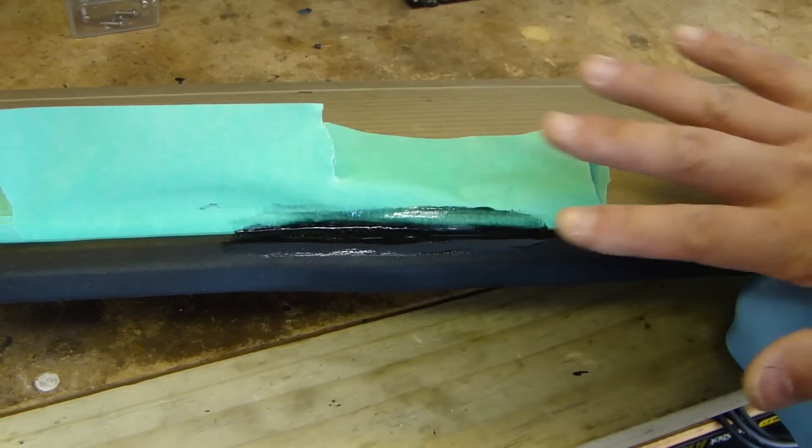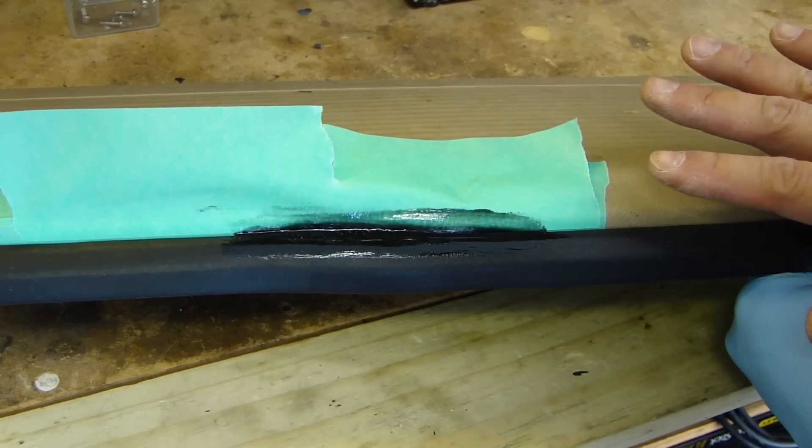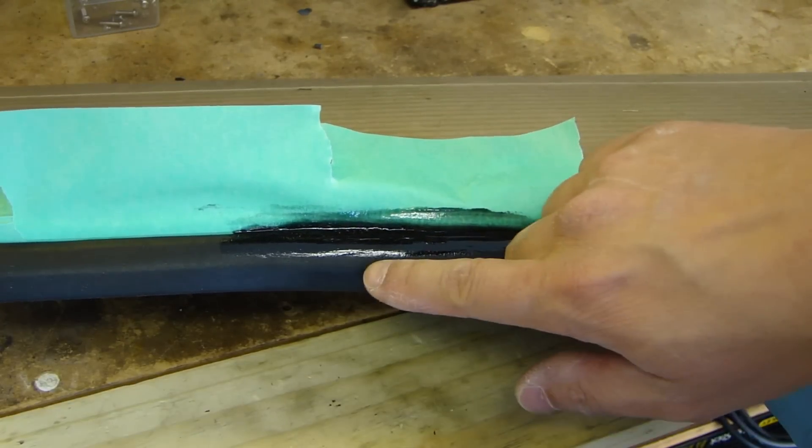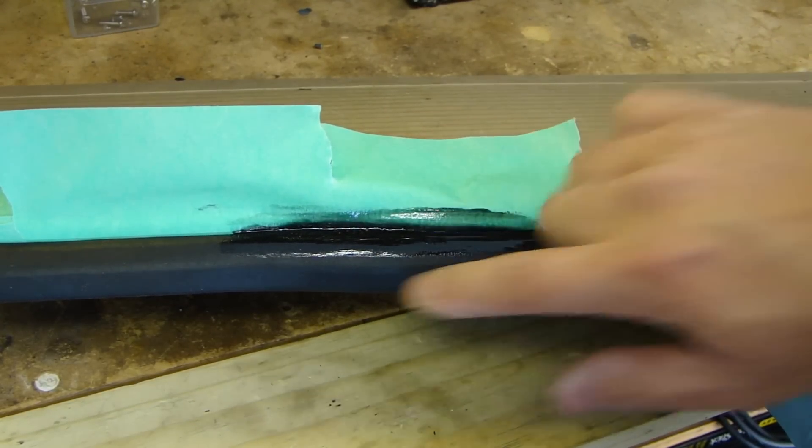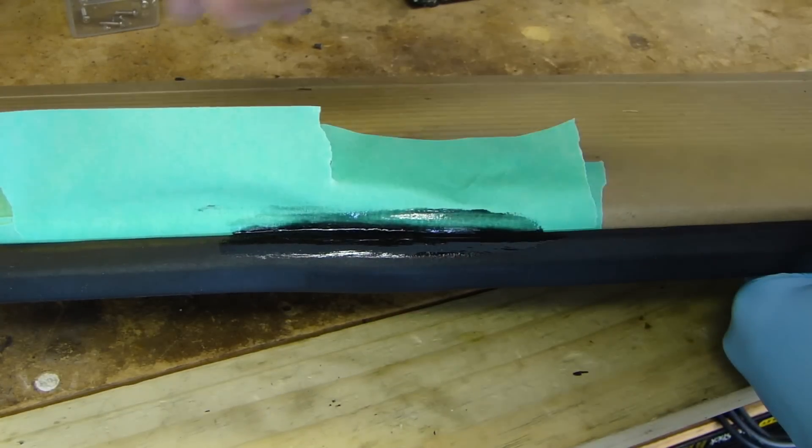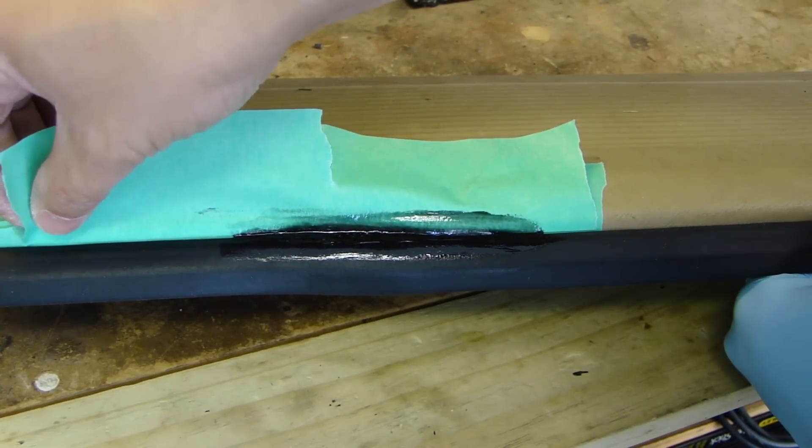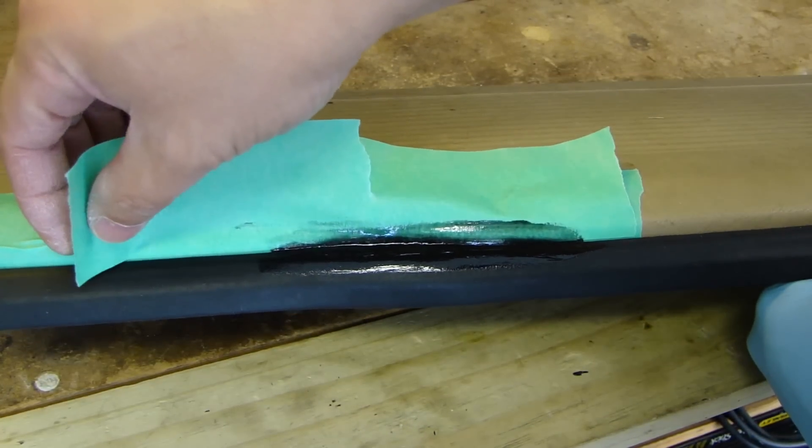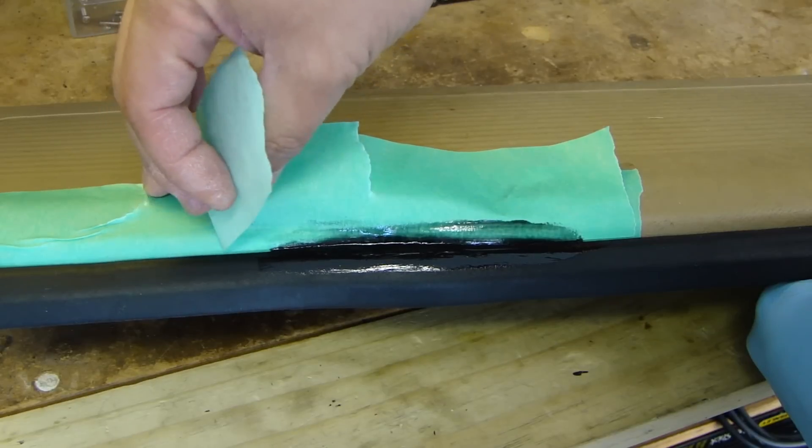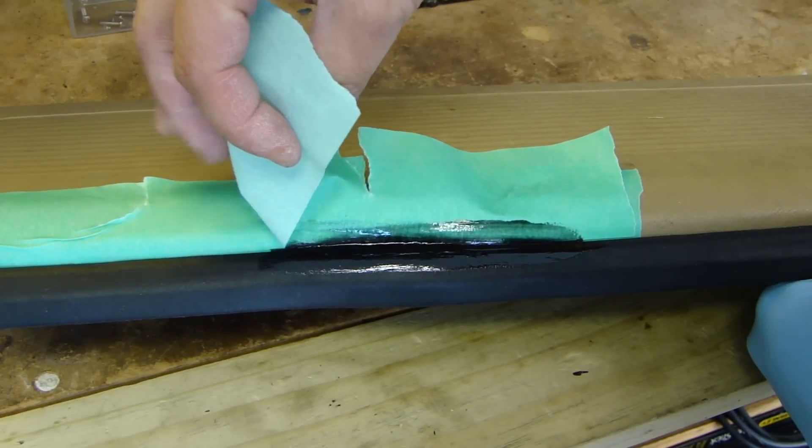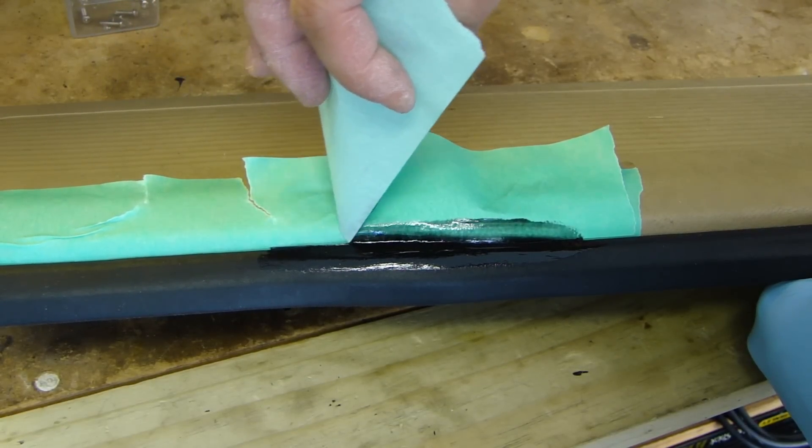So after you smooth everything out and all the voids are filled in, make sure the top side and the bottom side is not too thick. Thin that area out, and then go ahead and remove this top piece of the tape and pull it away from the silicone.